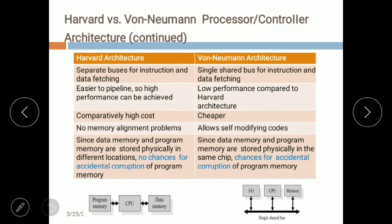Let's quickly go through the difference between Harvard and Von Neumann architecture, as this question is frequently asked in exams. In Harvard we have separate buses for instruction and data, whereas in Von Neumann we have a single shared bus. Harvard is easier to pipeline whereas in Von Neumann it is not possible. Harvard has comparatively higher cost because of two separate memories and two buses, while Von Neumann architecture is cheaper.